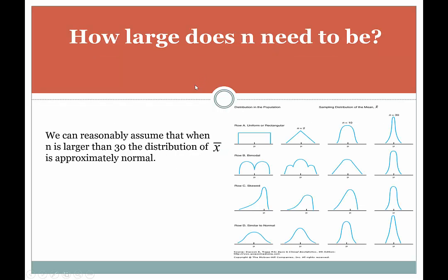How large does n need to be? We can reasonably assume that when n is larger than 30, the distribution of x-bar is approximately normal. I say 'reasonably' because even though that may not be true in every single distribution's case, here are a few examples that illustrate the point.